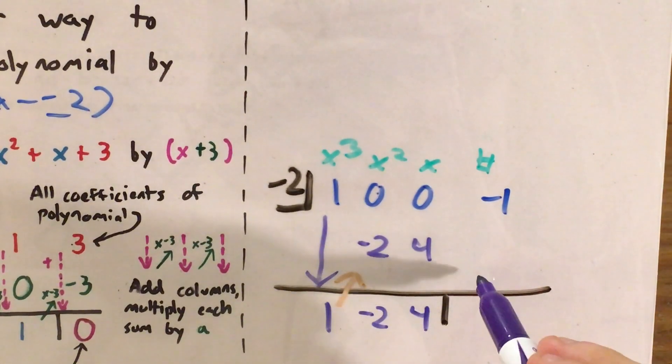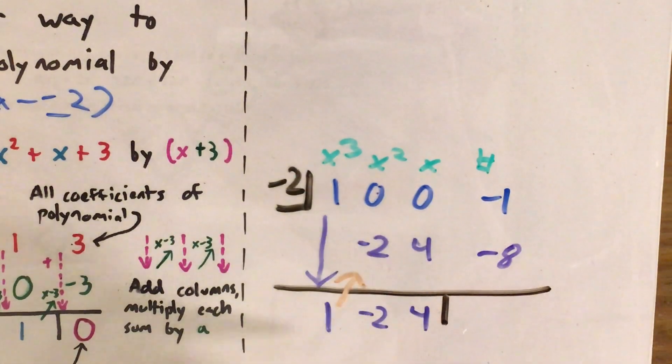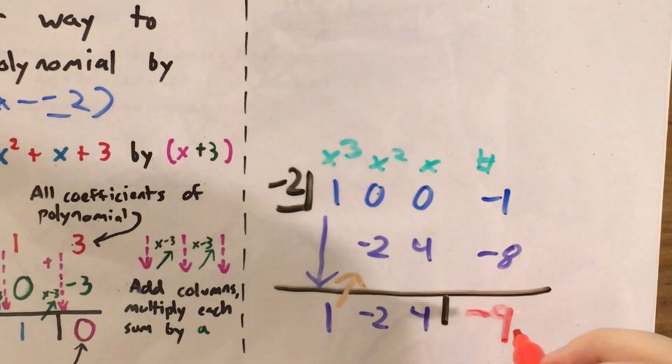I multiply, going diagonally, 4 times negative 2 equals negative 8. And now negative 1 plus negative 8 equals negative 9.